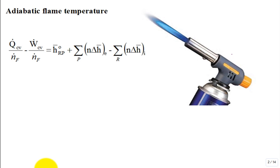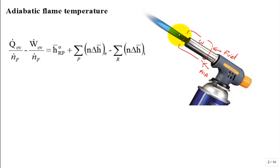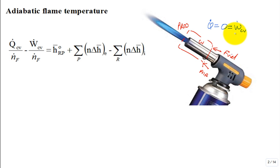So, adiabatic flame temperature. If you have a control volume and you bring in fuel and you bring in air — or a source of oxygen, it could be pure oxygen — in this control volume there is combustion, and coming out are the products of combustion. If you have some heat removal, it will reduce the temperature. But if it's adiabatic, there's no heat transfer, so the combustion products come out at a very high temperature. There's no work to extract energy either, so these products come out at an adiabatic flame temperature.